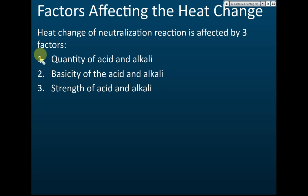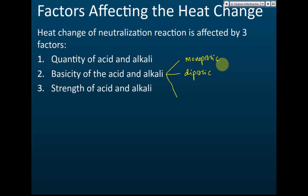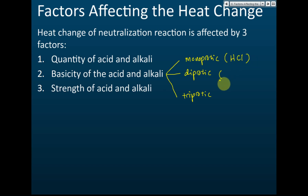There are three types of acids classified according to basicity: monoprotic, diprotic, and triprotic. An example of a monoprotic acid is HCl. A diprotic acid is H₂SO₄. A triprotic acid is H₃PO₄, phosphoric acid.